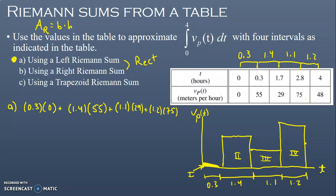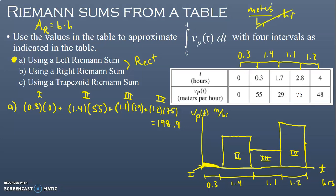Those four terms represent rectangles 1 through 4. If this were a non-calculator free response, I could just box this expression. If it's on the calculator, I'd type it in to get a value — in this case, 198.9. The base is in hours and the height is in meters per hour, so meters per hour times hours gives meters. The integral of velocity gives distance.